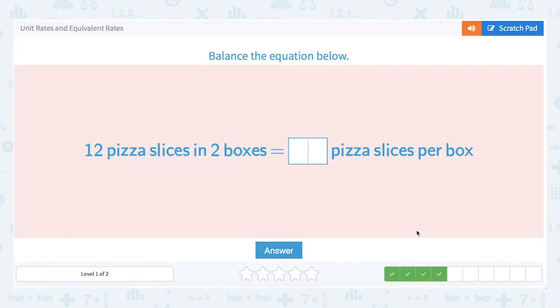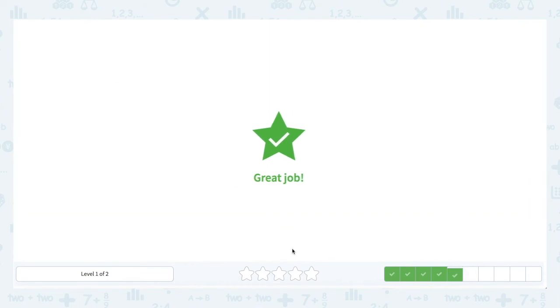12 pizza slices in two boxes. How many pizza slices per box? Well, this one, again, is pretty simple, like our one with the flowers being divided into two vases. If I've got 12 total pizza slices, I'm going to put half of them in one box, half in the other. That would be six pizza slices per box.